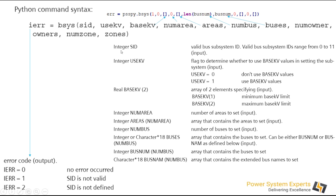The second parameter is useKV. In this case it is an integer but in the form of a flag, meaning it can only take two values: either 0 or 1. Based on this, your API is going to work. If you want to filter your bus system or subsystem in terms of voltages, you can use this parameter.